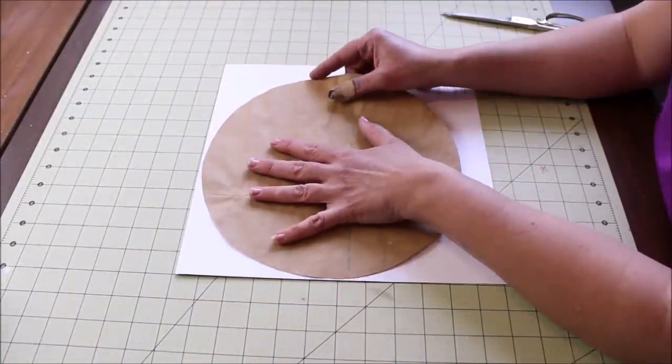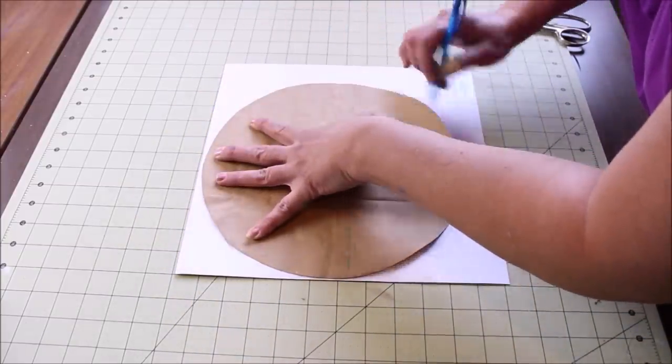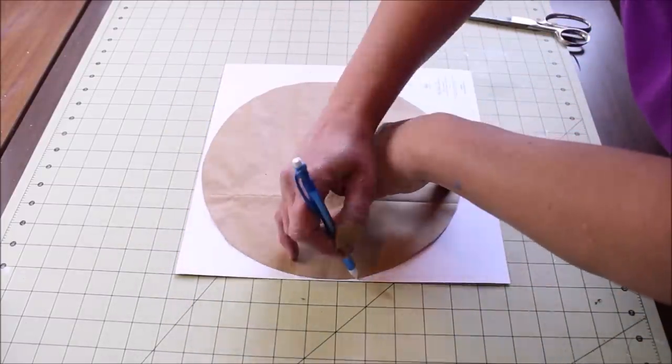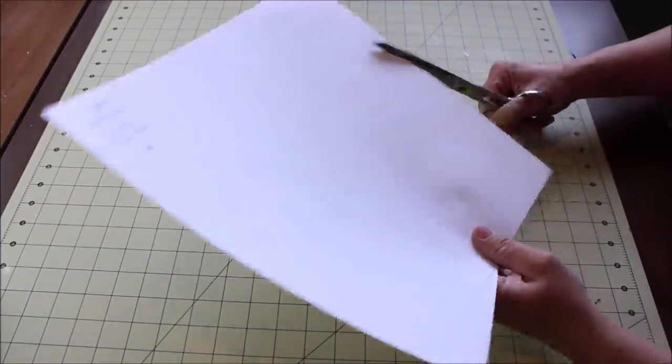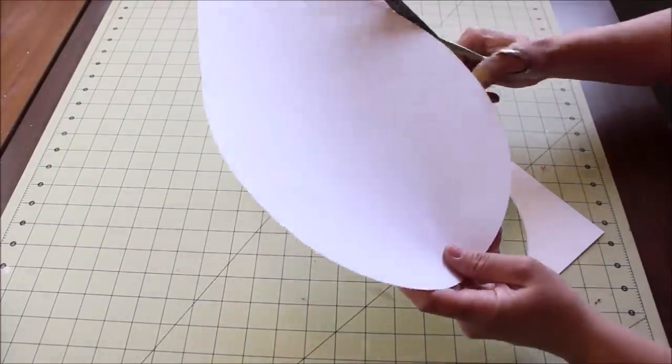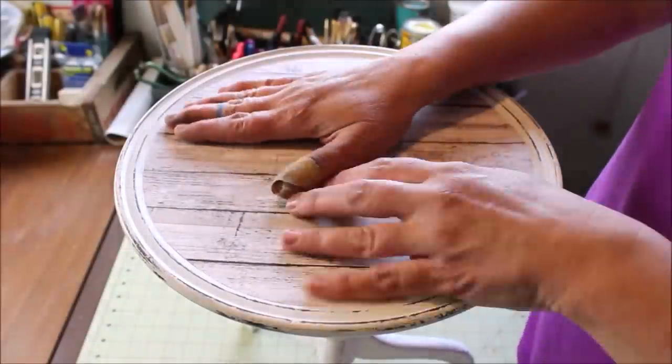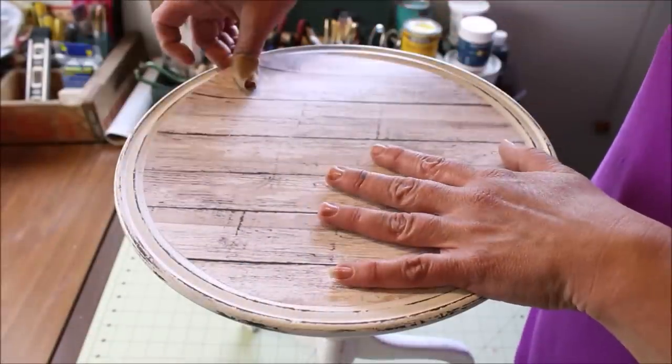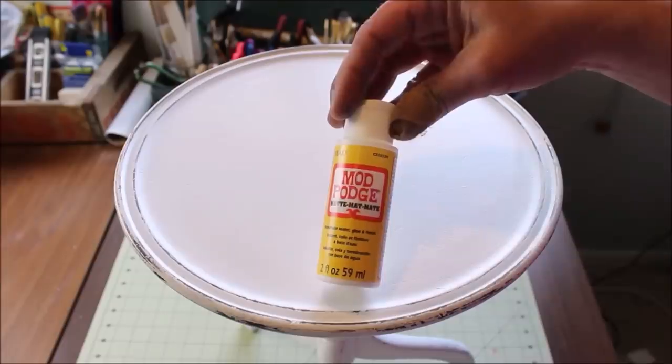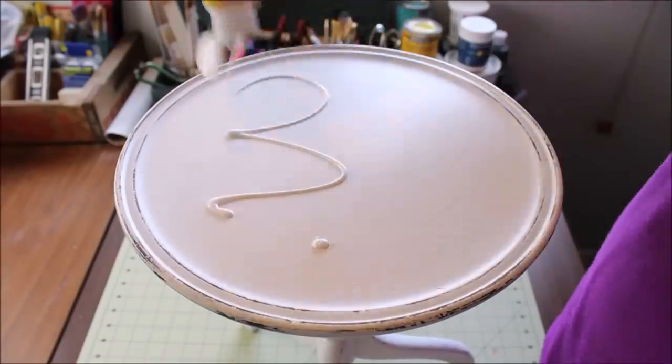Once the template fit nicely, I transferred it to a piece of scrapbook paper that I wanted to use, and then cut out the circle. One last double check that the circle fit was good, and I grabbed some Mod Podge, and spread it all out over the top of the table with a small brush.